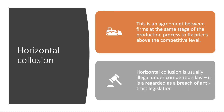Horizontal collusion takes place when there's a collusive agreement between businesses at the same stage of the supply chain or production process. For example, they might agree to fix prices above the competitive level. Typically, horizontal collusion is illegal under competition laws — regarded in the UK, the European Union, and the United States as a breach of antitrust legislation.